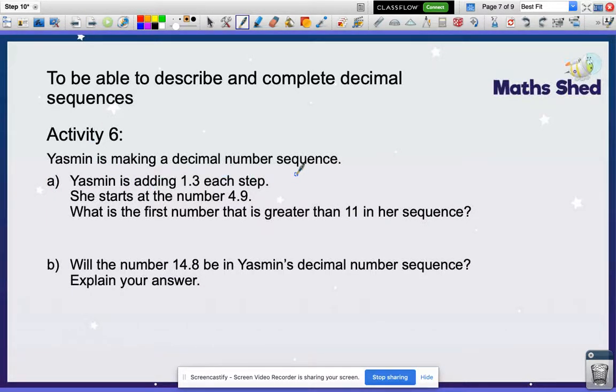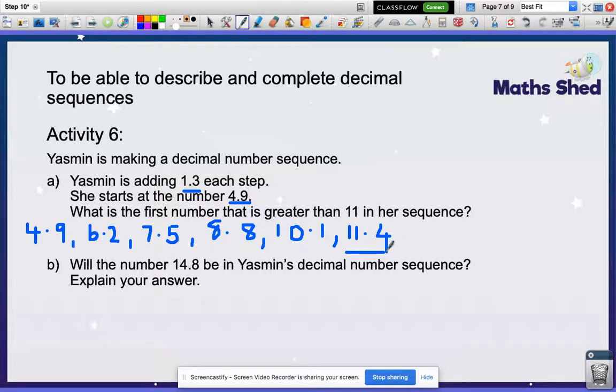Yasmin is making a decimal number sequence. She's adding 1.3 to each step. She starts at 4.9. What is the first number that is greater than 11 in her sequence? So you have to create a number line. Start at 4.9, add on 1.3. So add on 1, that would be 5.9, and 0.3 would be 6.2. Then add on another 1.3: 7.5, 8.8. Add on 1.3: 9.8, 10.1. Add on another 1.3: 11.4. The first number that's greater than 11 would be 11.4.